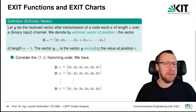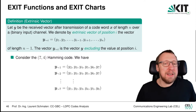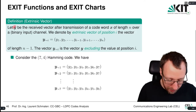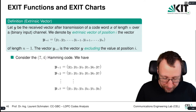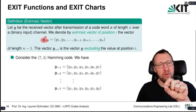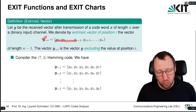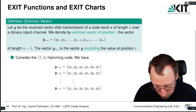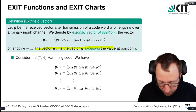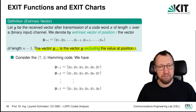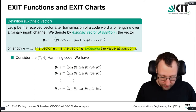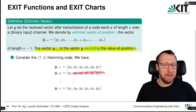First, we define something called an extrinsic vector. An extrinsic vector ỹ_i is the received vector y with component y_i removed: it's y_1, y_2, …, y_{i−1}, y_{i+1}, …, y_n. For example, ỹ_1 = (y_2, …, y_7), ỹ_2 = (y_1, y_3, …, y_7), and so on.